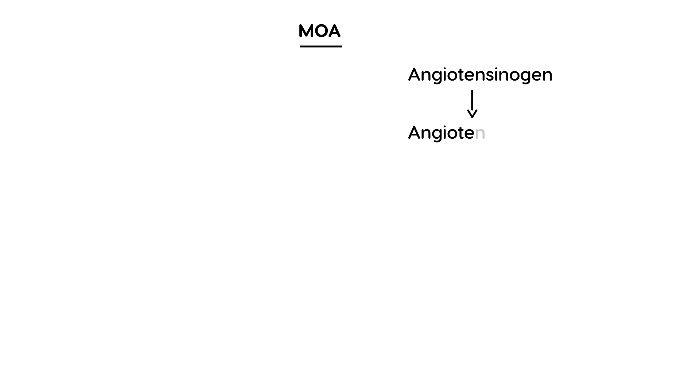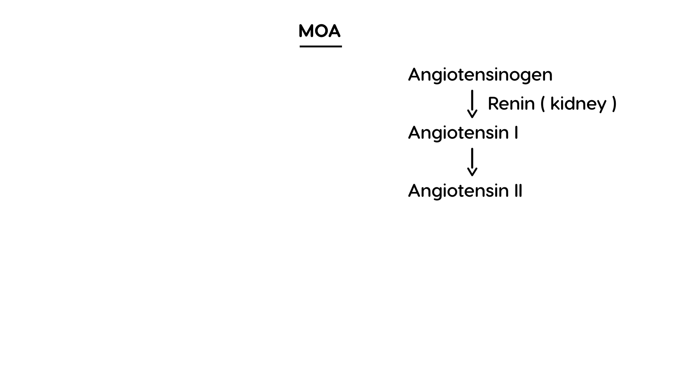To understand why this is happening, I wanted to draw a diagram that illustrates the mechanism of action of an ACE inhibitor. First we have angiotensinogen, and that is converted to angiotensin 1. That is accomplished with the help of renin, which comes from the kidney. Then angiotensin 1 is converted to angiotensin 2, and that is accomplished with ACE — angiotensin converting enzyme.